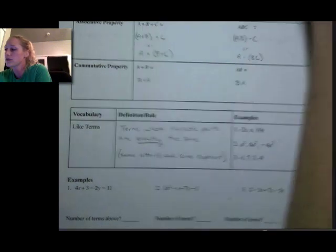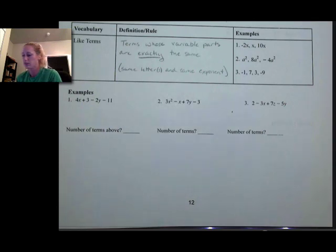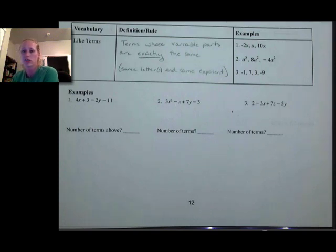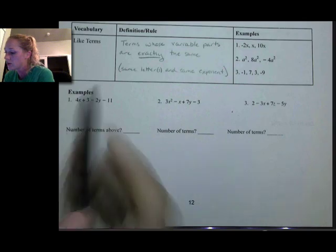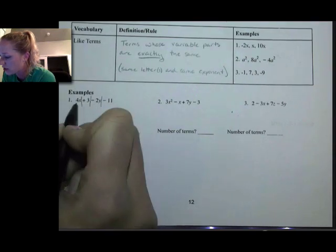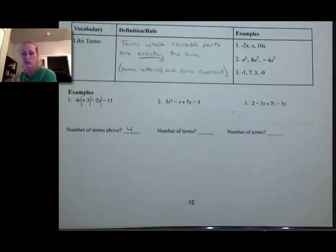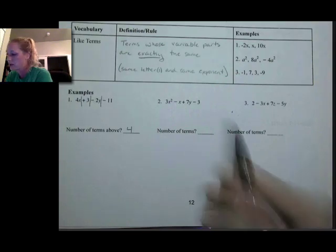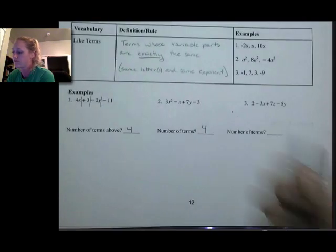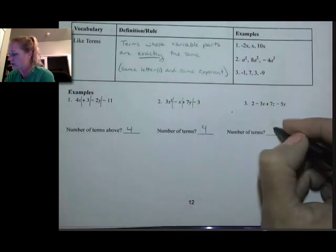So the variable part has to match exactly, or just not be there like in that last example. Now we're going to look at the number of terms. Anytime there's addition and subtraction, it's going to separate the terms. So here is addition, here's subtraction, here's subtraction — so there are one, two, three, four terms. You can look at however many addition and subtraction signs there are — it's one more than that. They all seem to have four terms.